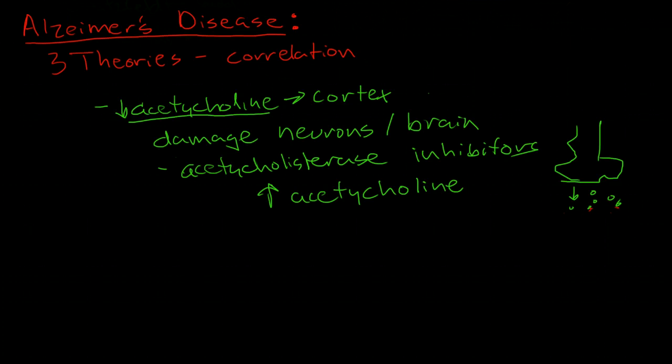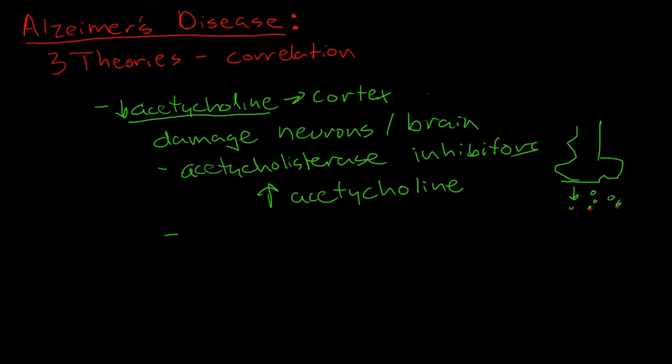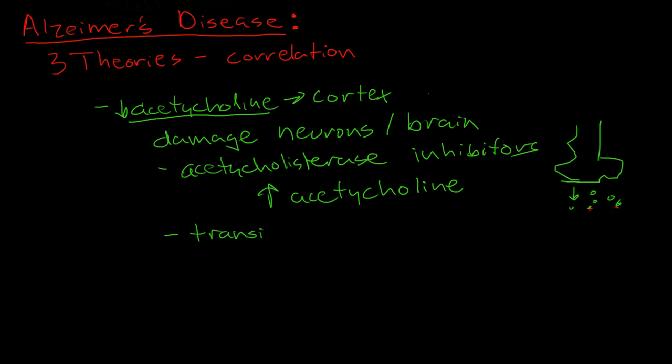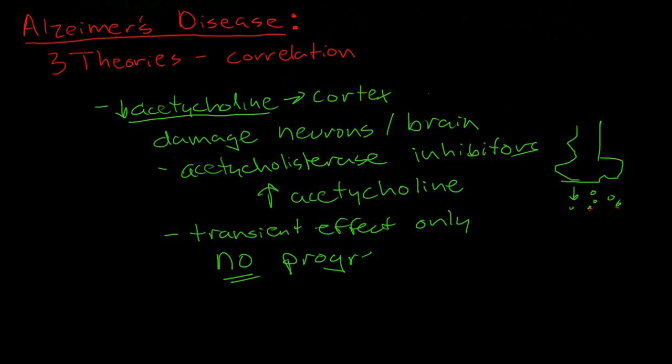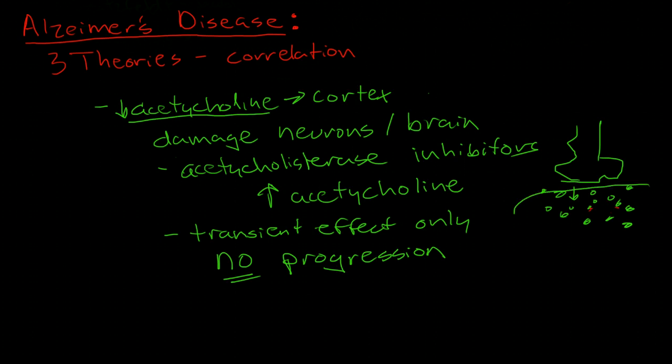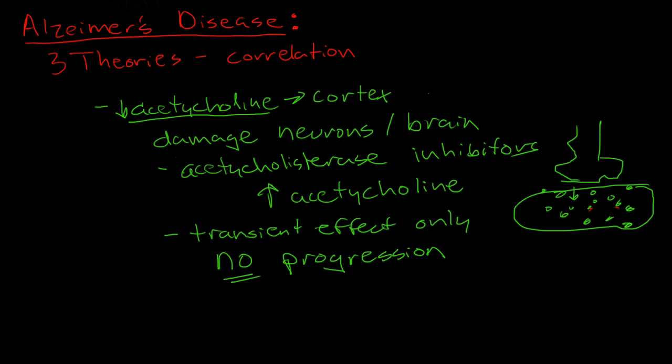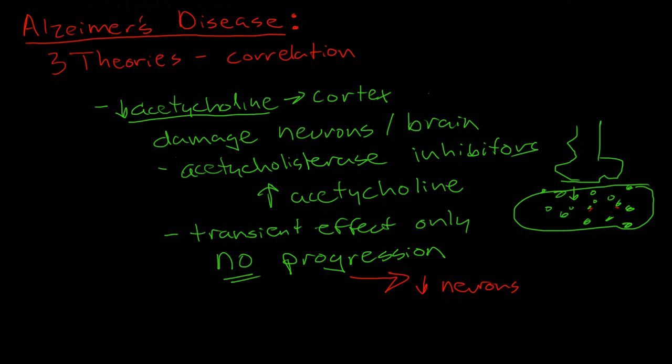So this seemed to be very promising based on the theory, but unfortunately the theory has now been called into doubt because the acetylcholinesterase inhibitors only have a transient effect on people with Alzheimer's disease. And it has no change in the progression of the disease. So we've increased the amount of acetylcholine in the brains of people that are starting to develop Alzheimer's disease, but no matter how much acetylcholine these people have in their brains, the disease continues to progress. They continue to have progression to fewer neurons and brain atrophy.